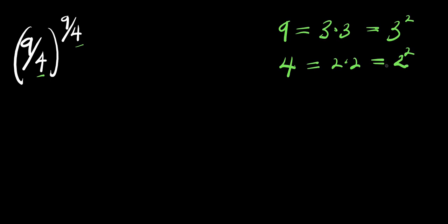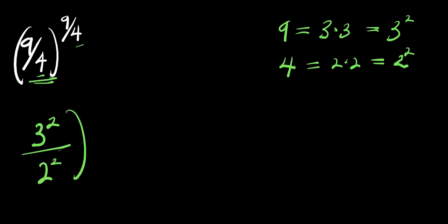So what we are going to do is: at this base, we are going to replace 9 with 3 to the power of 2, divided by — we replace 4 with 2 to the power of 2 — and this is raised to the power of 9 over 4.